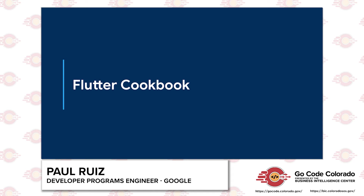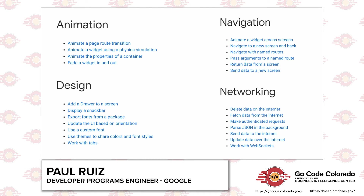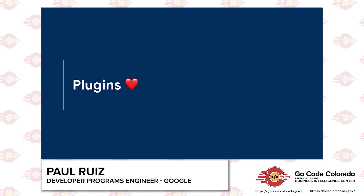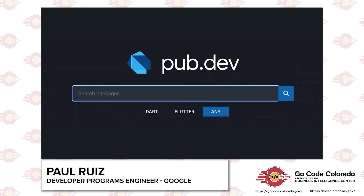I'm a huge fan of what the Flutter team has put together with documentation — especially since a lot of it isn't just standard component descriptions. One thing they have is the Flutter cookbook, a documentation page containing code samples or recipes for common tasks you might want to do in Flutter, covering animations, design elements, networking, and more. Plugins — essentially a fancy word for libraries or modules — are one of my favorite things about Flutter. Because the development community is so active, they've created thousands of open source plugins you can use to easily accomplish tasks without reinventing the wheel. You can find most of these at pub.dev, a site created by Google for searching through plugins and finding their documentation and source code.